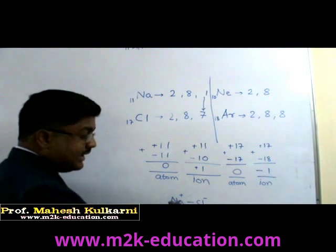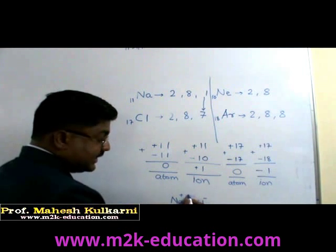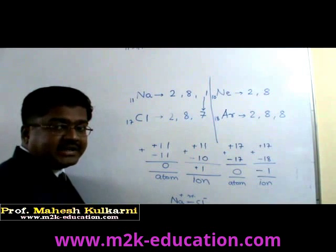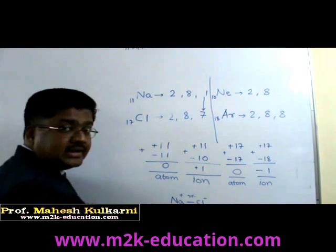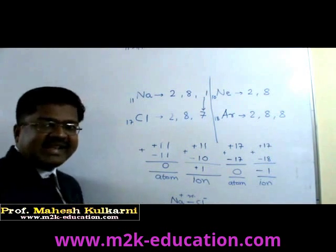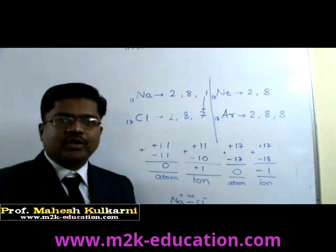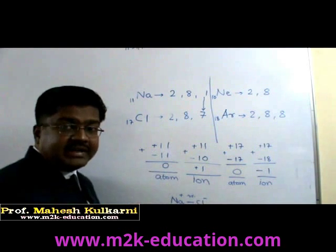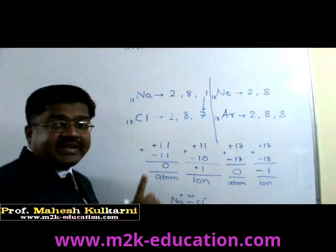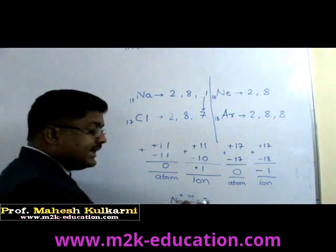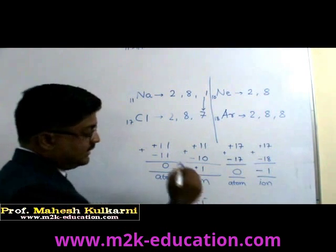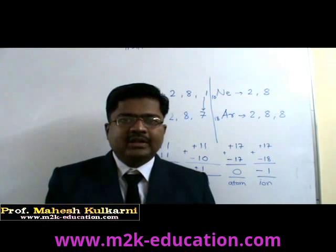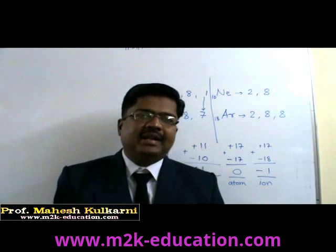So when sodium and chlorine interact with each other, sodium donates an electron to chlorine and chlorine accepts the electron from sodium. Sodium develops a positive charge of +1, and chlorine develops a negative charge of −1. There is attraction between unlike charges, and this attraction is called electrostatic attraction between the two ions. We call this attractive force the ionic bond or electrovalent bond. This is one example of ionic bond formation.